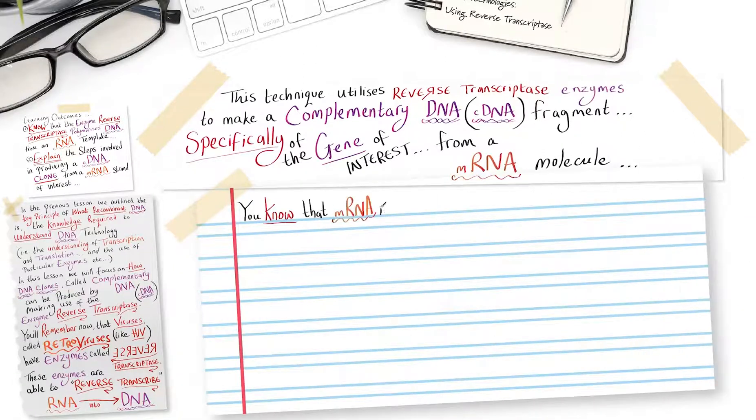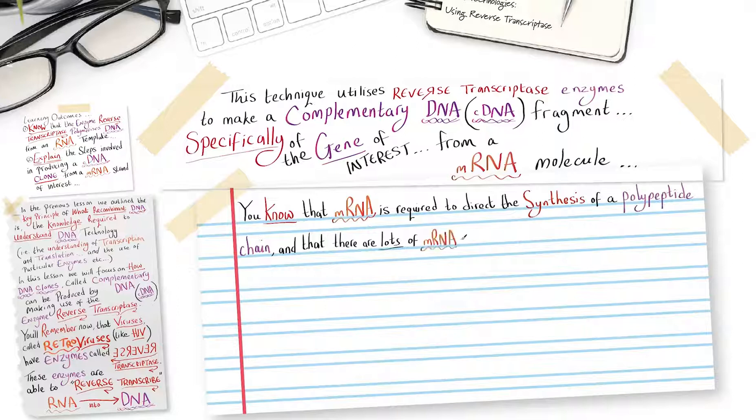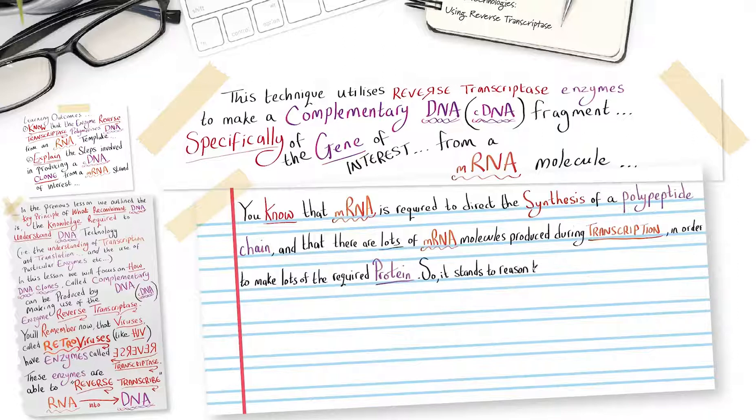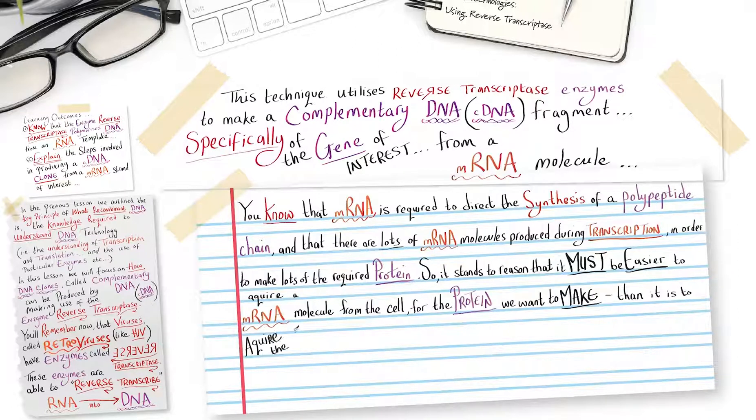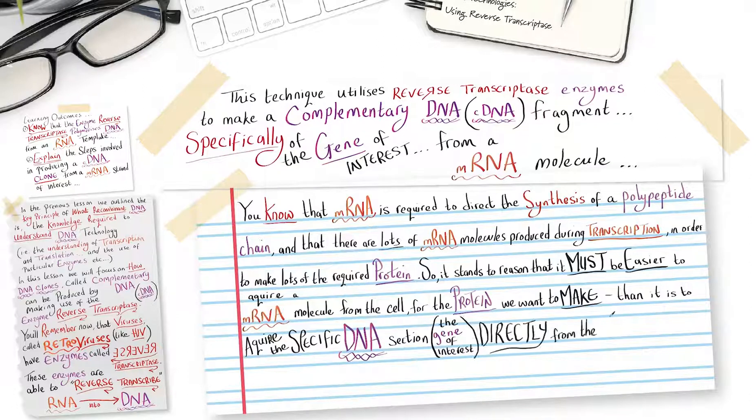You know that messenger RNA is required to direct the synthesis of a polypeptide chain, and that there are lots of messenger RNAs produced during transcription in order to make lots of the required protein. So it stands to reason that it must be easier to acquire a messenger RNA molecule from the cell for the protein we want to make than it is to acquire the specific DNA section, the gene of interest, directly from the chromosome itself.